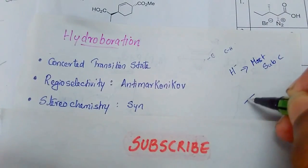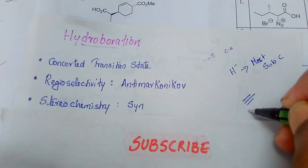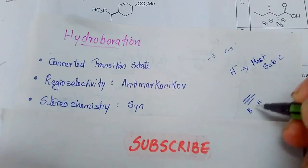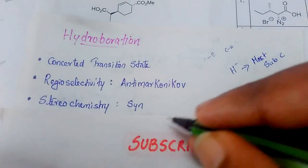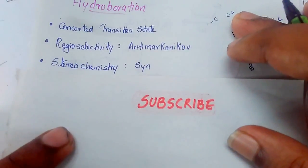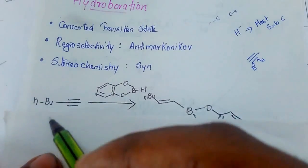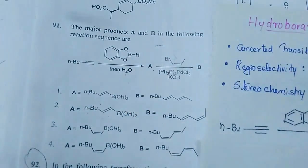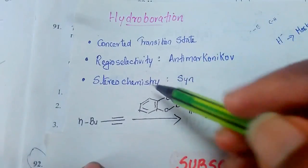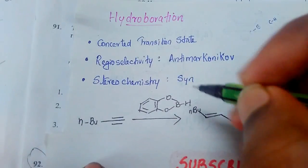That is, if a double bond or triple bond is there, both boron and hydrogen are forming on the same side, forming cis product or syn addition. Here in our question, this triple bond N-butyl form is given and this species is called catechol boron.